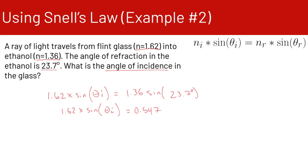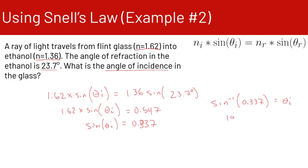To get sine theta i by itself, we divide both sides by 1.62, giving sine theta i equals 0.337. Just like the last problem, to find theta i we take the inverse sine of 0.337, which gives us our angle of incidence: 19.7 degrees.